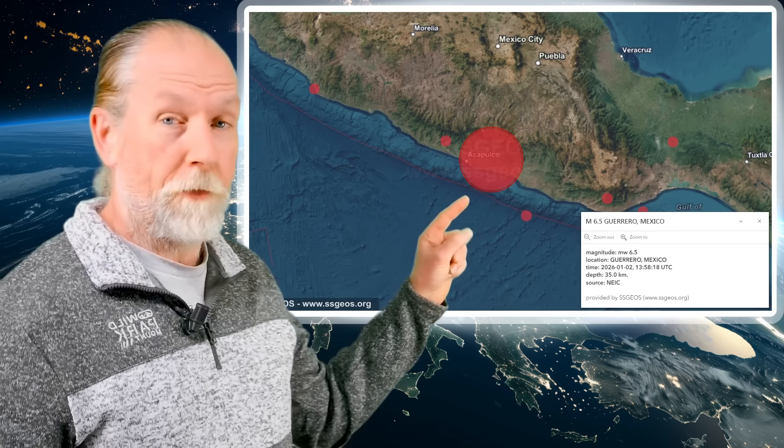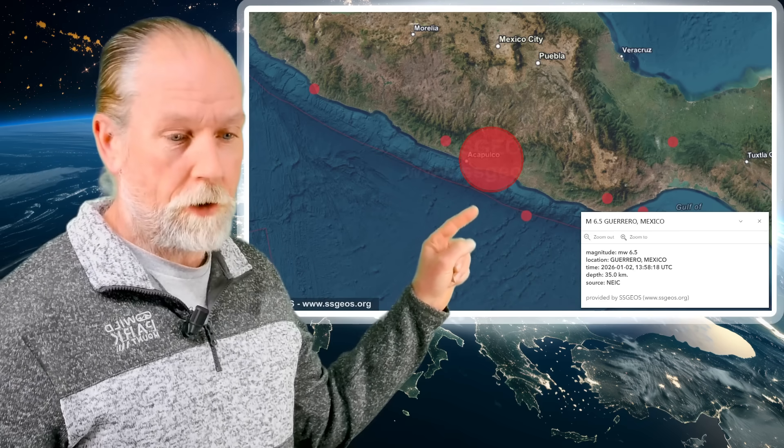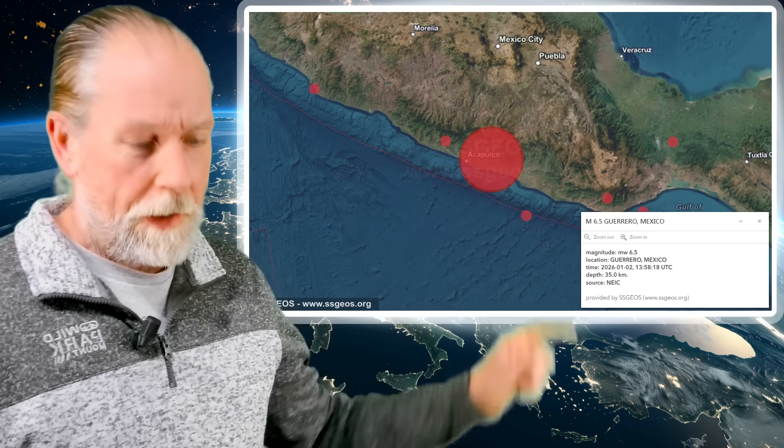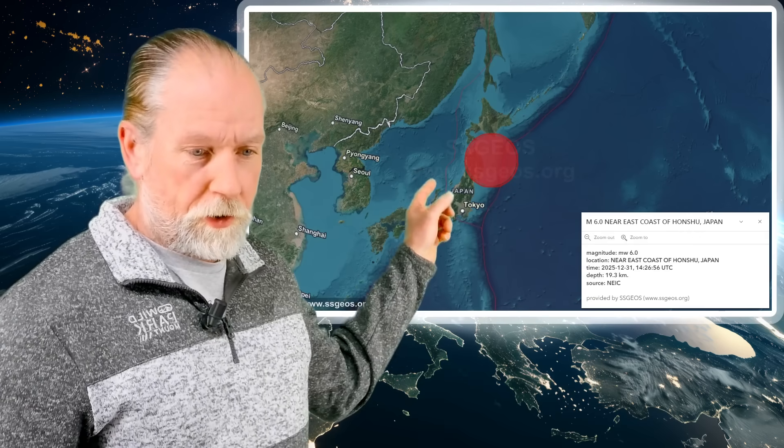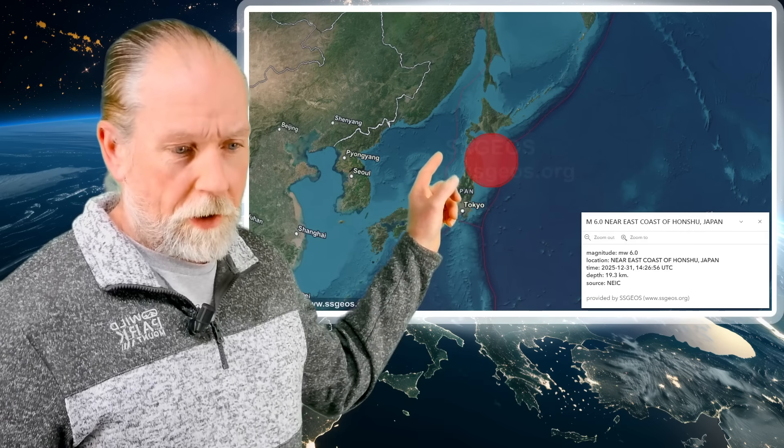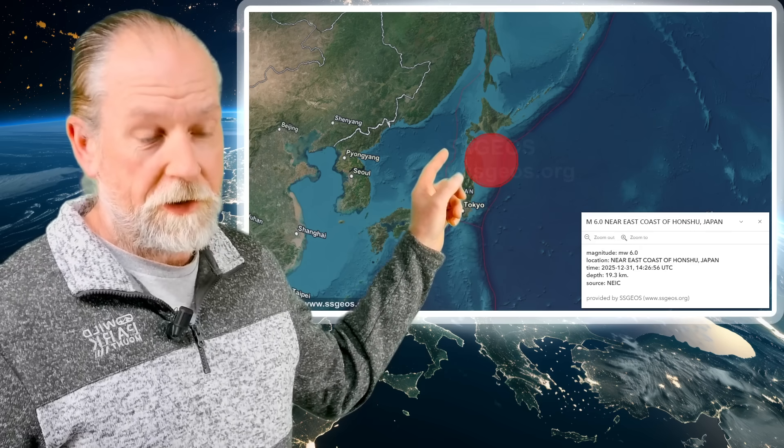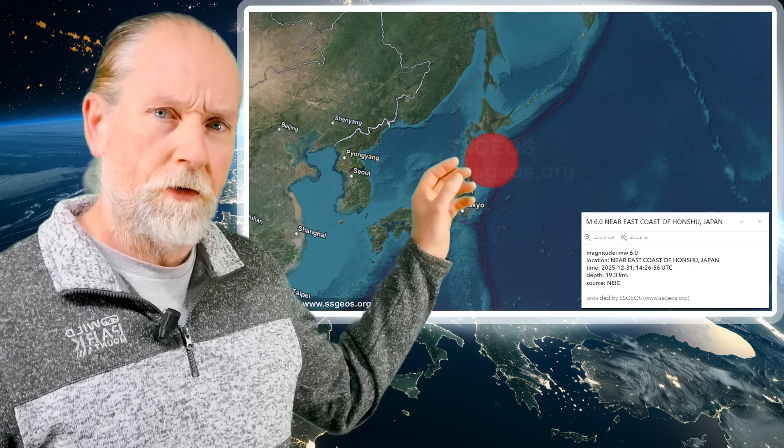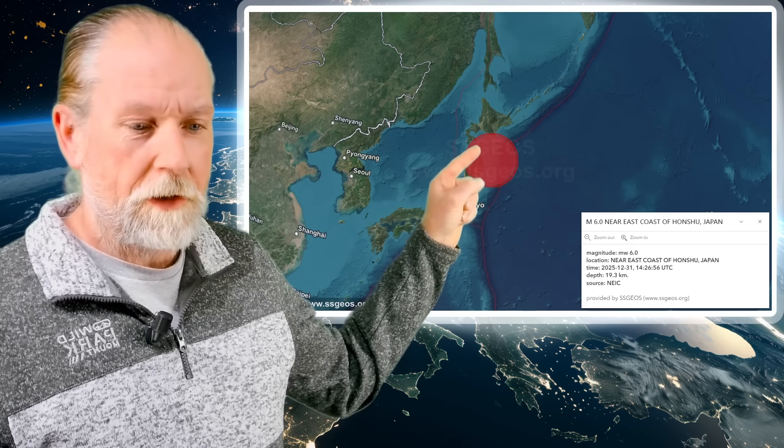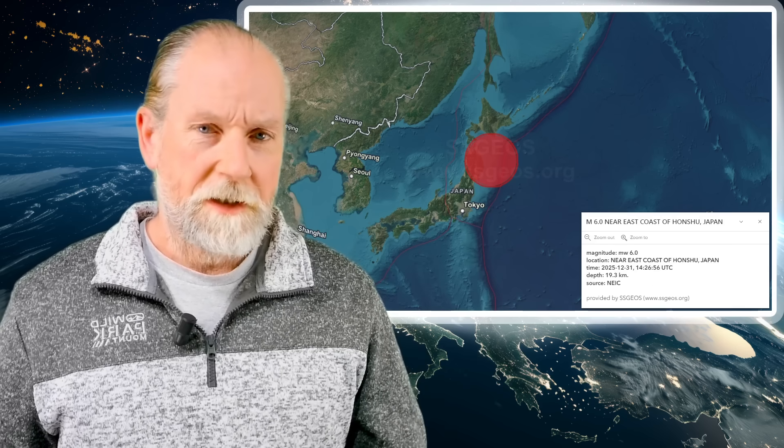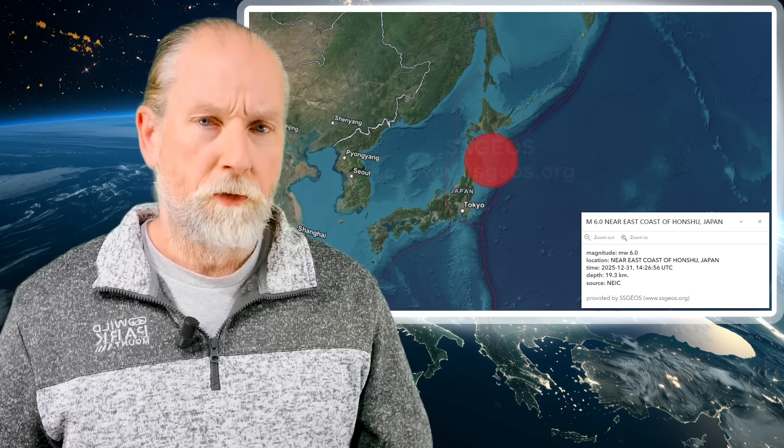We had a magnitude 6.5 earthquake a few hours ago at Guerrero, Mexico. This is the strongest earthquake in the last couple days and it comes on top of the 6.0 earthquake just two days ago on the 31st near the east coast of Honshu, Japan. This follows the major earthquake that happened there in December. There was also another magnitude 6 earthquake yesterday in the Indian Ocean.